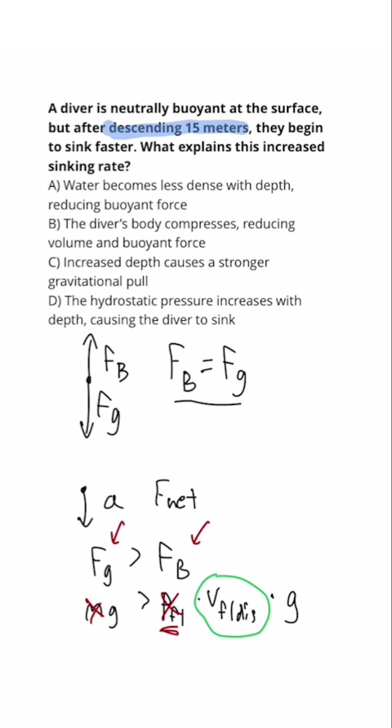As you get deeper in the water, the hydrostatic pressure gets greater, which is going to compress the body. So the space that the body takes up actually decreases, which means the volume of the diver decreases, and the volume of the diver is equal to the volume of the fluid displaced, which means B is the answer.